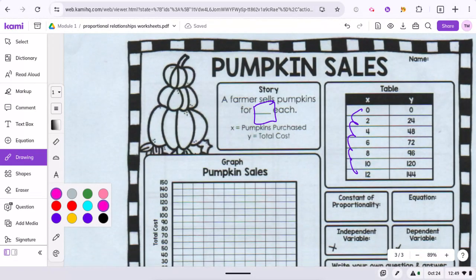Okay, now for the pumpkin sales. So they give you all the data in the table, 0, 0, 2, 24, 4, 48. So if you wrote out the equation,